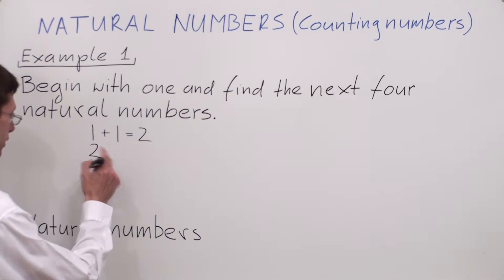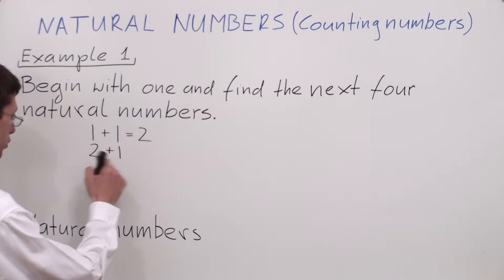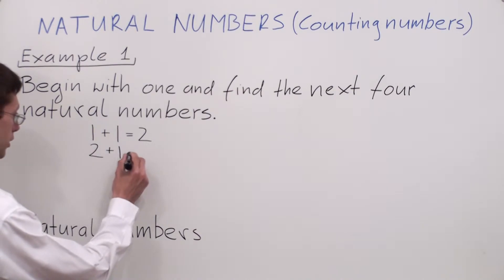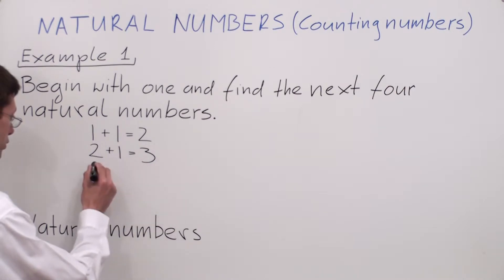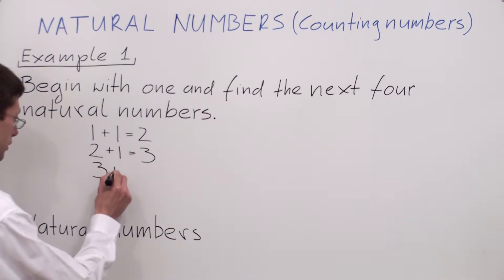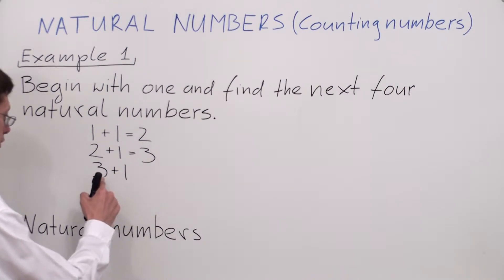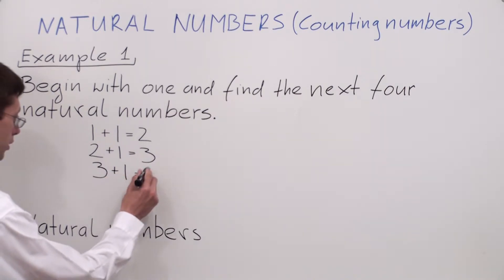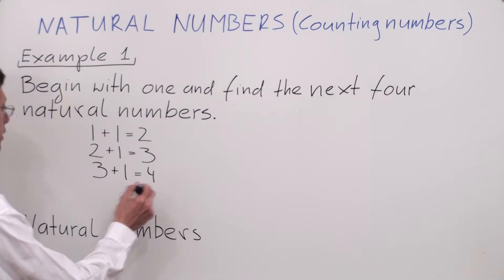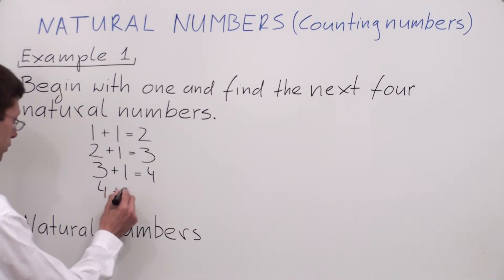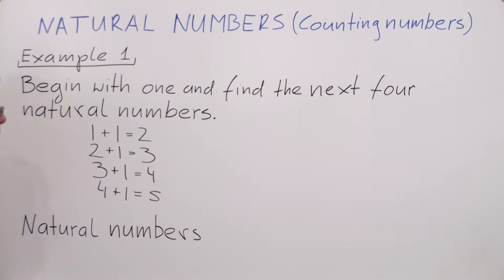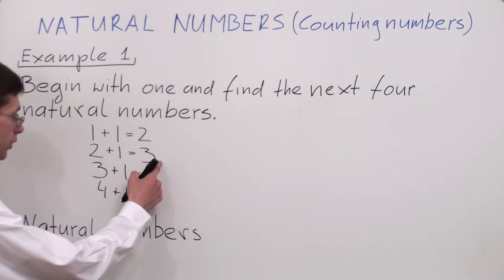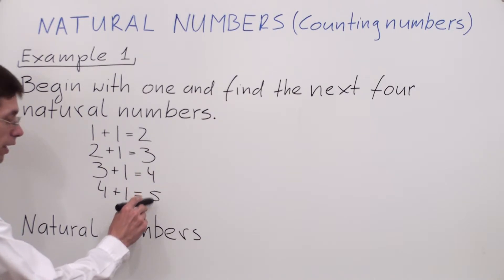If I want to find the next natural number, I simply add 1 to my previous one. So 2 plus 1 is equal to 3, so my next natural number is 3. If I want to find the next one, I simply add 1 to 3: 3 plus 1 is equal to 4. And if I want to find the next natural number, I simply add 1 to 4. So my next 4 natural numbers after 1 are 2, 3, 4, and 5.